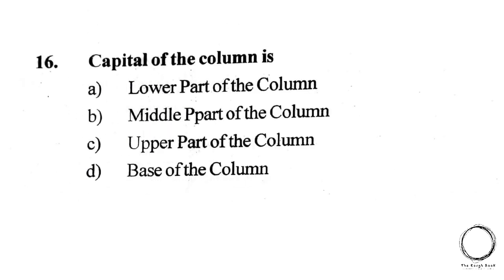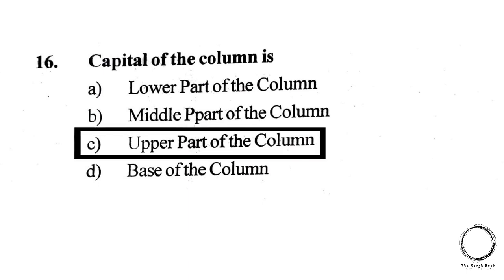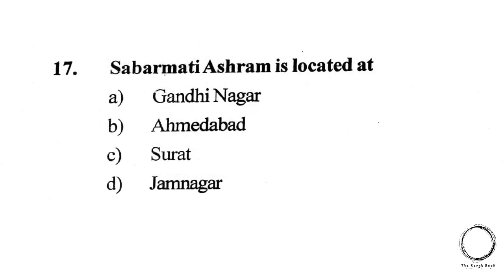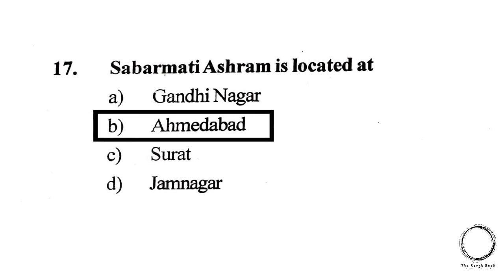Next question: The capital of a column is — A) Lower part of the column, B) Middle part of the column, C) Upper part of the column, D) Base of the column. The answer is C) Upper part of the column. Next question: Sabarmati Ashram is located in — A) Gandhinagar, B) Ahmedabad, C) Surat, D) Jamnagar. The answer is B) Ahmedabad.